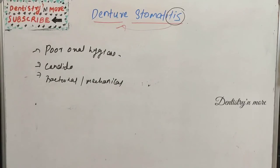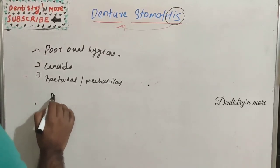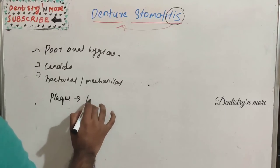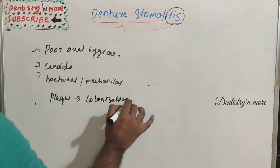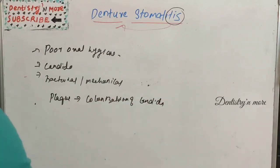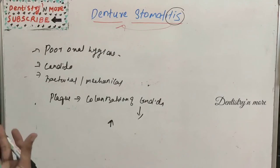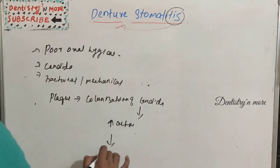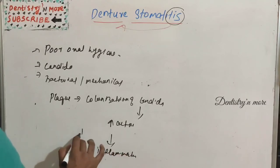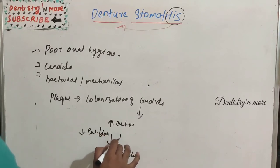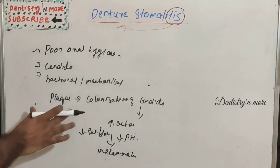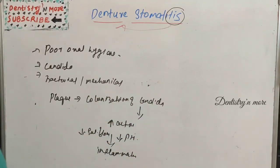The pathogenesis begins with plaque accumulation, followed by colonization of Candida albicans species, then increased candidal enzymatic activity. Due to low salivary flow and decreased pH, this ultimately leads to inflammation. The sequence is: plaque accumulation → Candida colonization → increased enzymatic activity → low salivary flow and low pH → inflammation.